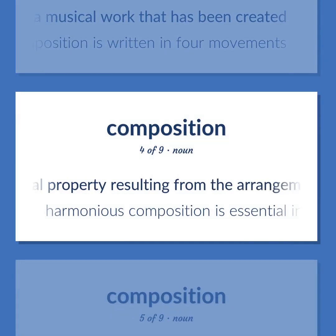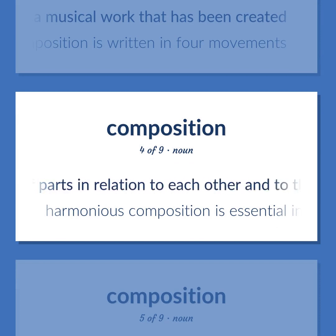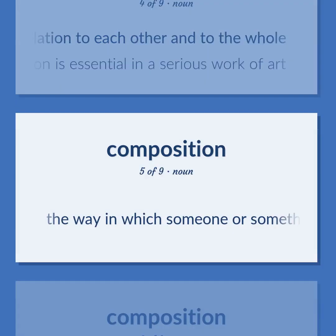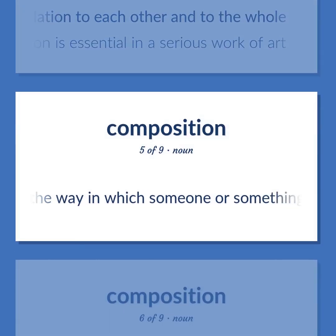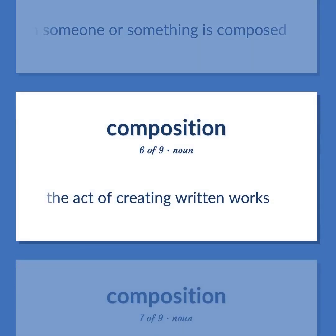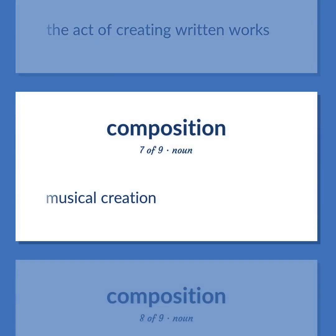The spatial property resulting from the arrangement of parts in relation to each other and to the whole. Harmonious composition is essential in a serious work of art. The way in which someone or something is composed. The act of creating written works. Musical creation.